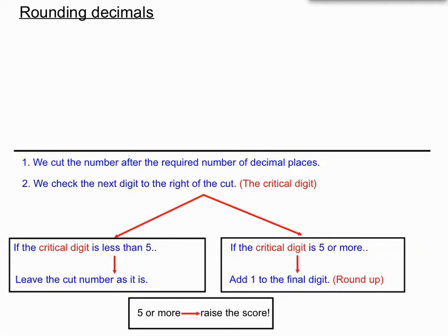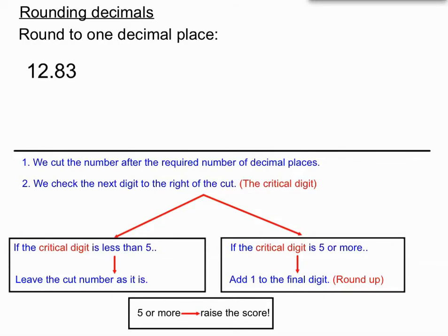Let's look at an example. This question asks us to round to one decimal place. We have 12.83, which has two decimal places, but we want to leave one decimal place — only one digit to the right of the decimal point. Step one: we cut the number after the required number of decimal places. You can see I've put a red line to cut the number so that it only has one decimal place.